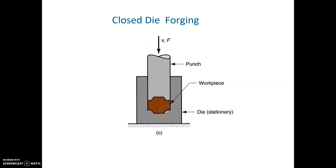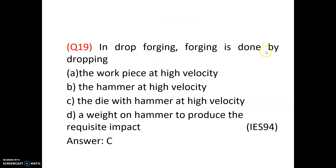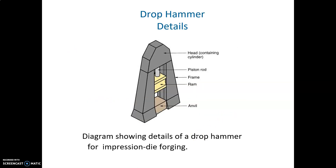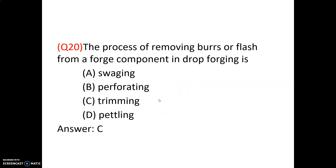In drop forging, forging is done by dropping the die with hammer at high velocity onto the workpiece to produce requisite impact. So option C is correct. The process of removing burrs or flash from a forged component in drop forging is called trimming — option C is correct.